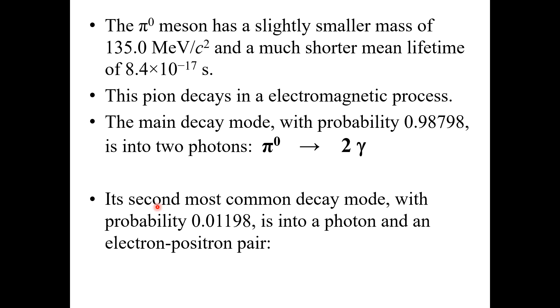Its second most common decay mode, with probability 0.01198, is into a photon and an electron-positron pair, which we can represent as: neutral pion leads to gamma ray plus electron-positron pair. This is how the neutral pions decay.